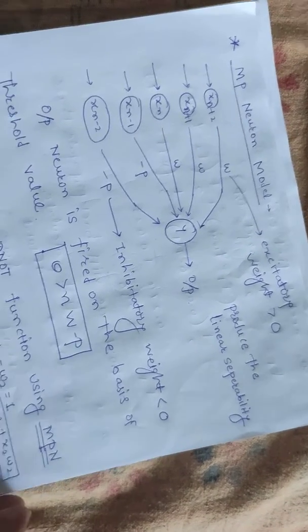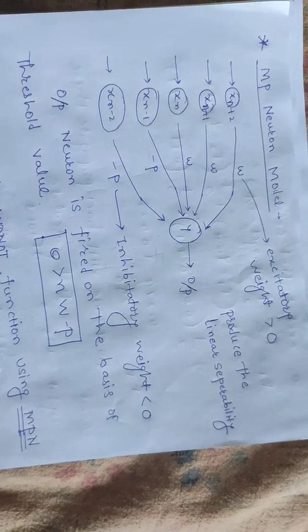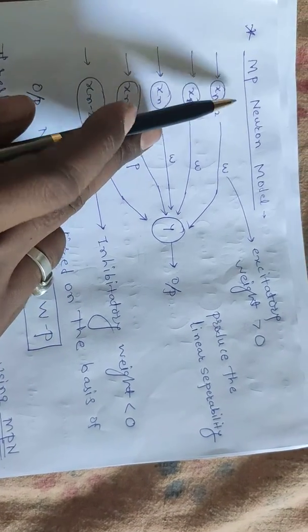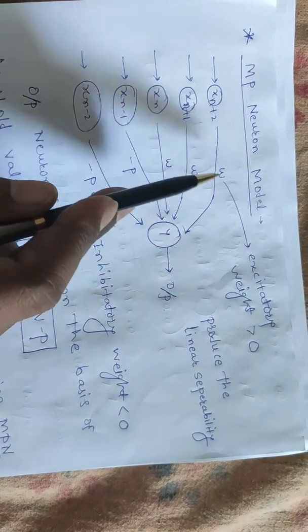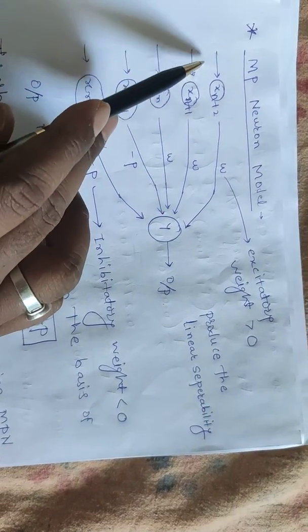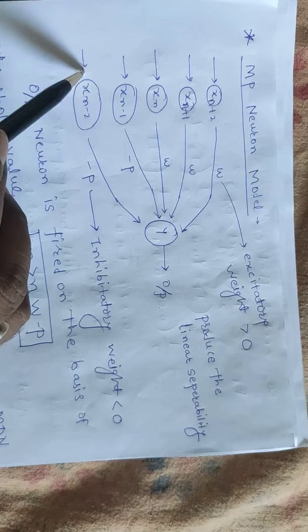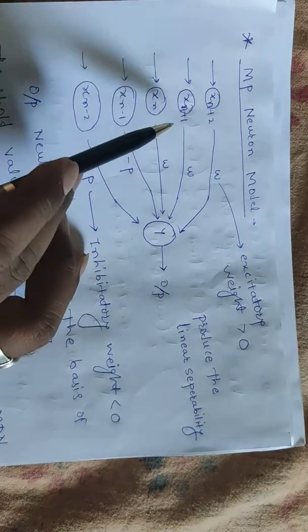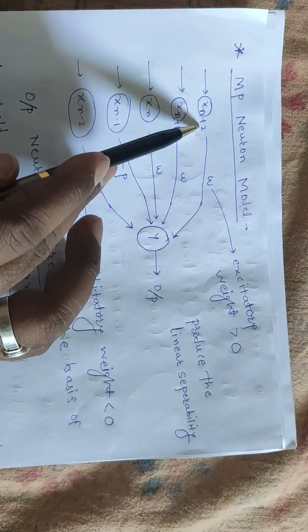Welcome to the machine learning course. Today we are going to discuss the McCulloch-Pitts neuron model. This is the basic structure of the MP neuron model. Here we have various inputs: xn, xn plus 1, xn plus 2, xn minus 1, xn minus 2.